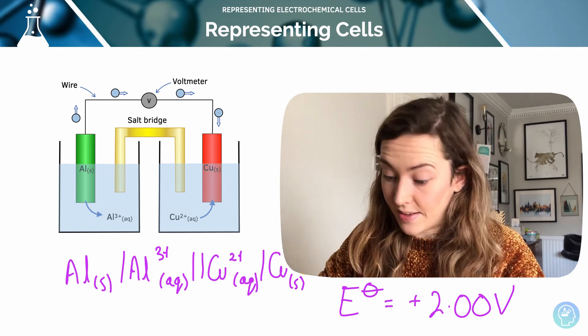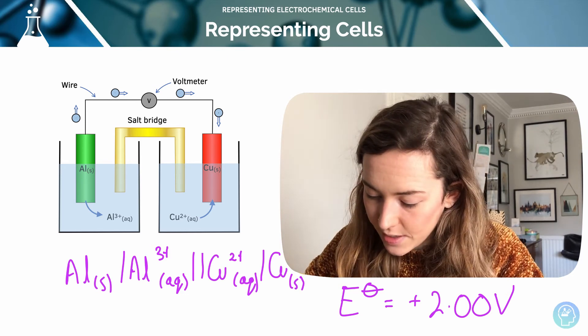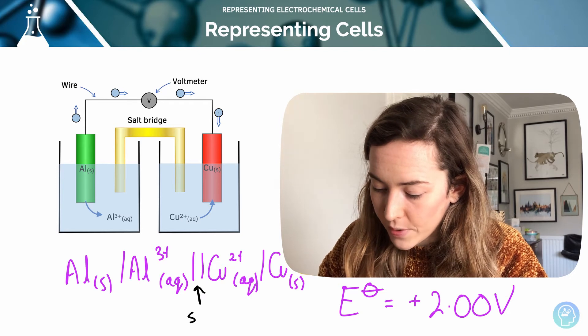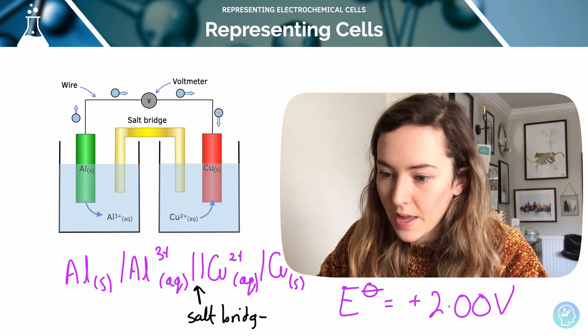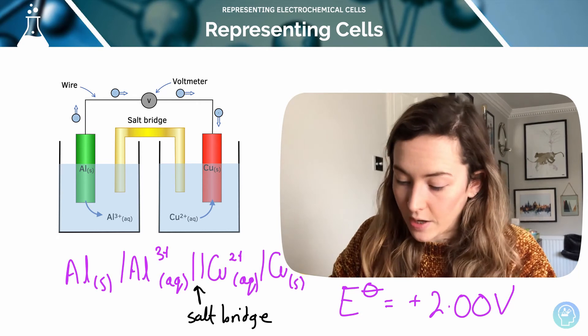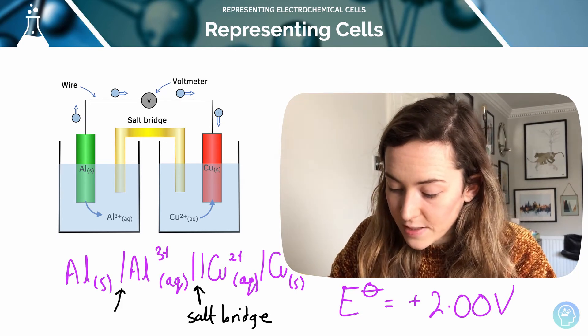So in the example I've just written, this double vertical line represents our salt bridge. And our vertical solid lines equal phase boundaries.